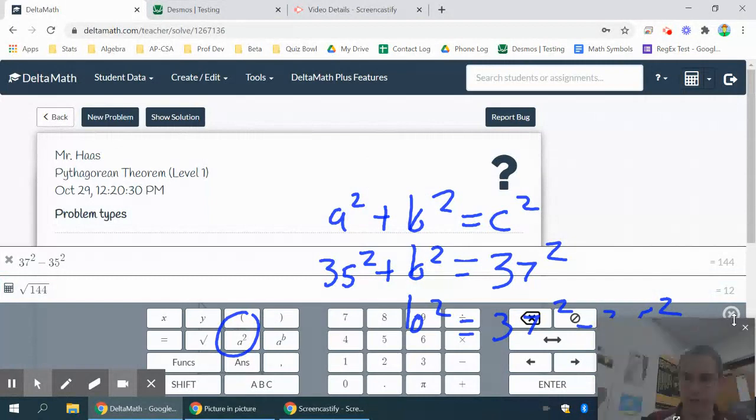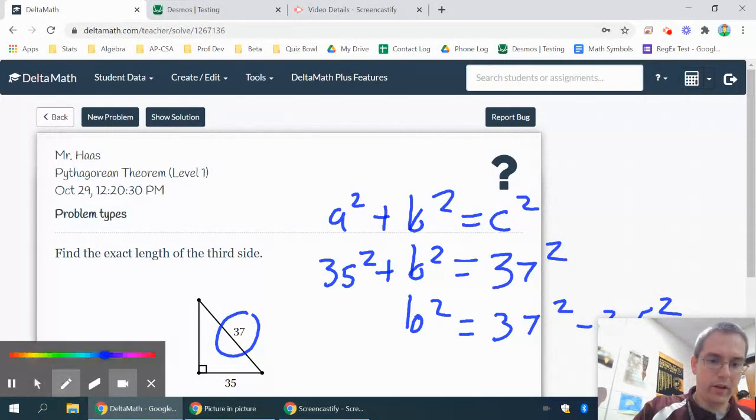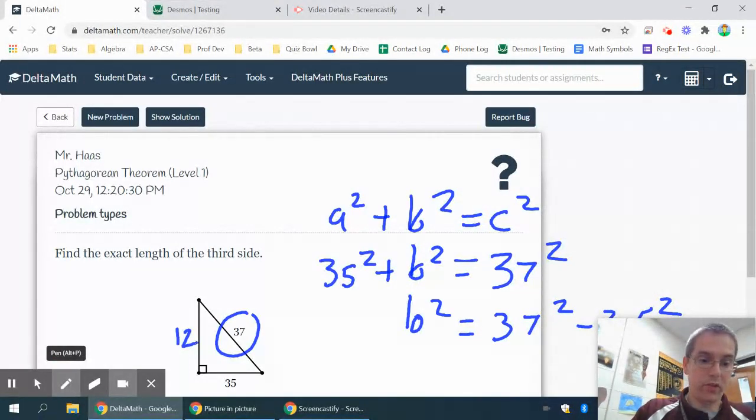It's always a good idea to see if that answer is reasonable in the context of the problem. And an answer of 12, a side of 12, does not look that unreasonable. And some of these aren't to scale, so the fact that that side looks a little longer than 35 doesn't really bother me much. It's shorter than the hypotenuse, so it's probably okay.